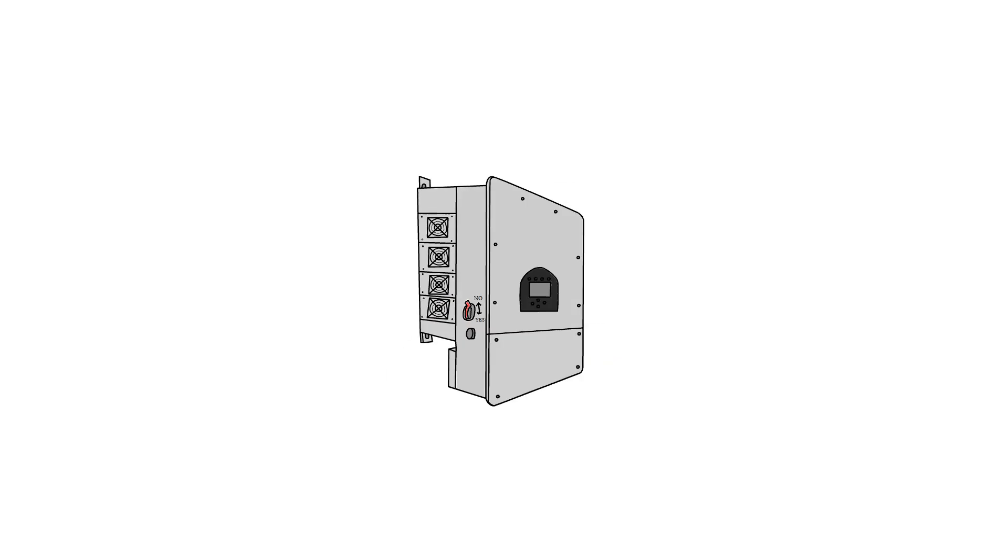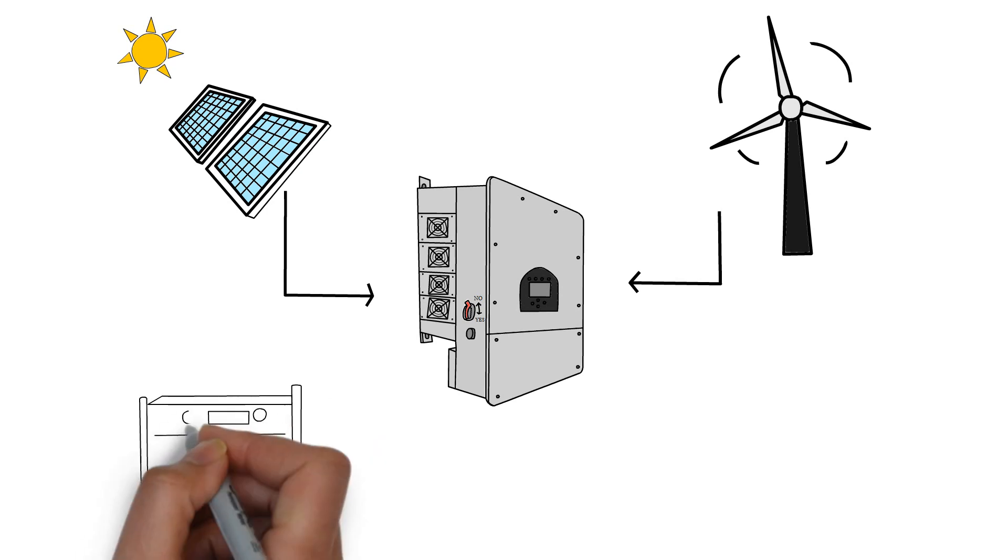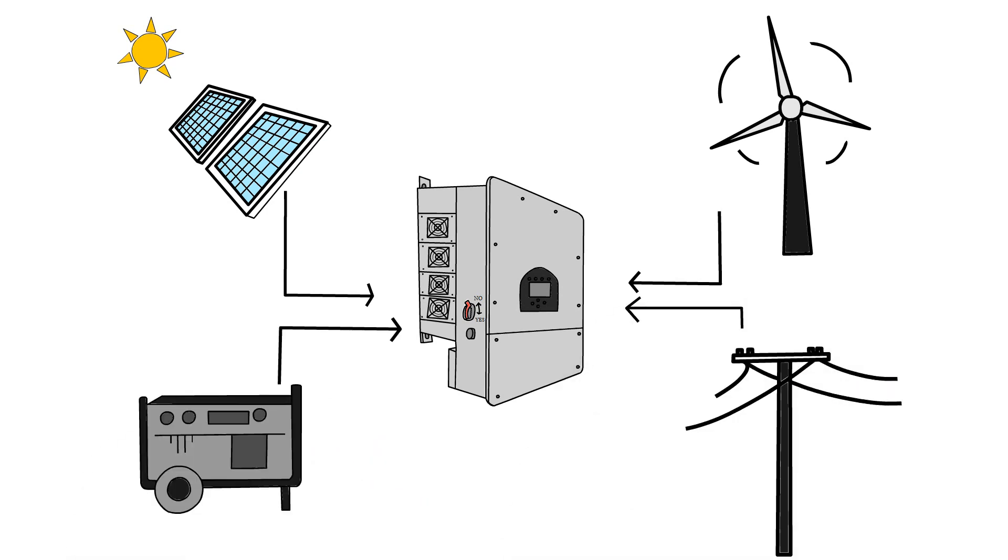The SunSync Hybrid Inverter can be connected to wind turbines, a solar PV array, a generator, as well as local grid supply, if available.